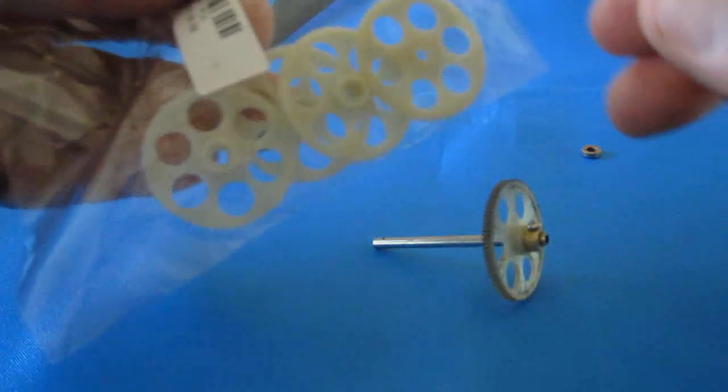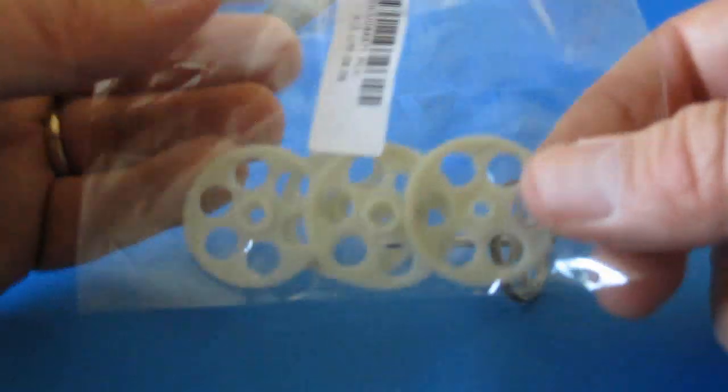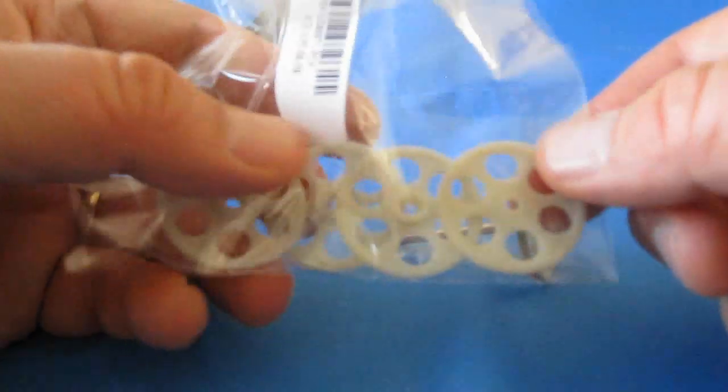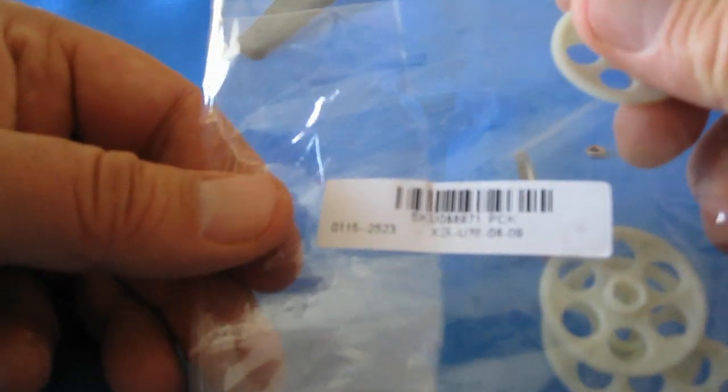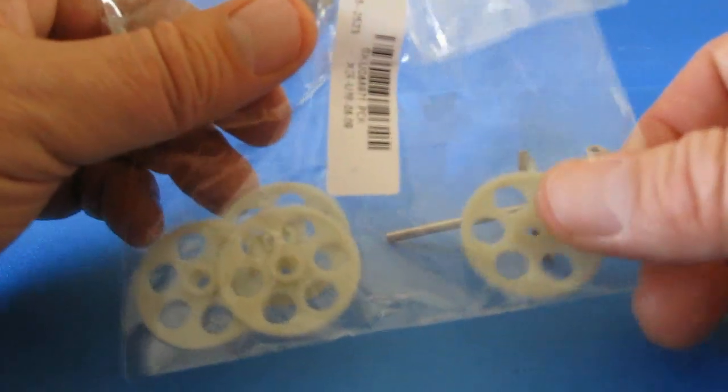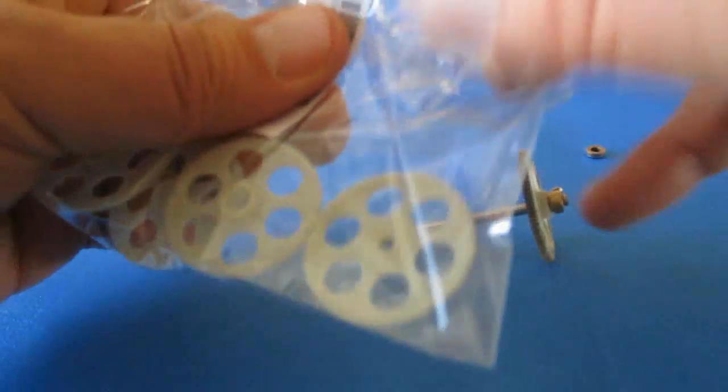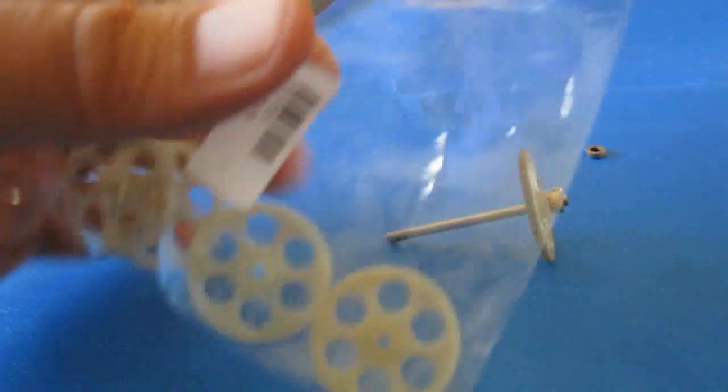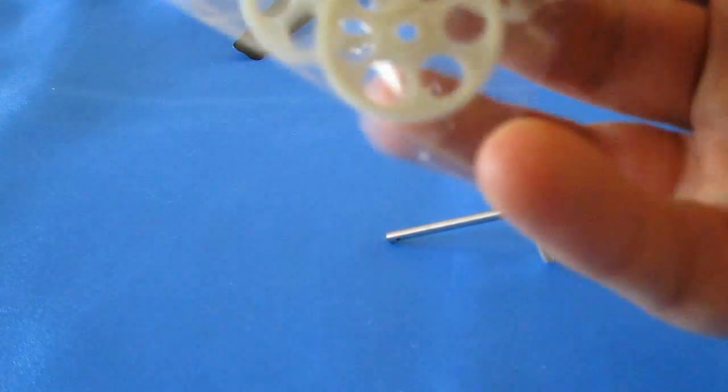The thing about these gears is they're very inexpensive. They come in packs of about four for about $1.60 directly from Banggood. There's the SKU number, it's 088971. So a package of four runs about $1.60. I'm going to grab one of these out here.